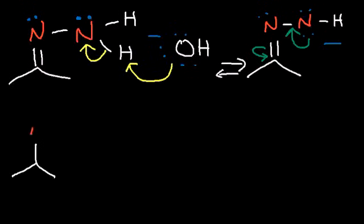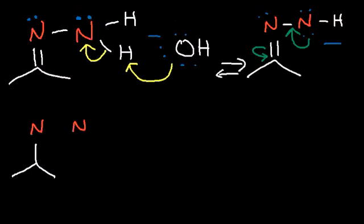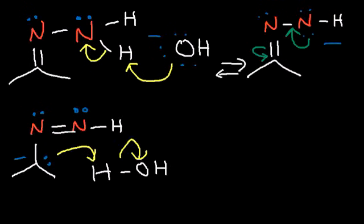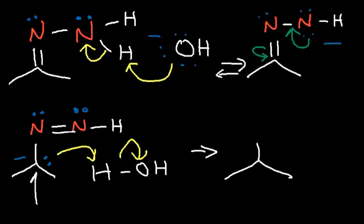We now have the resonance form of this conjugate base, where the negative charge is shared between the nitrogen atom and the carbon atom. So now the carbon has the negative charge and acts as a base, grabbing a hydrogen from water and regenerating the hydroxide ion. Our goal is to replace the nitrogen group and add two hydrogens to this carbon — this is the first hydrogen we've added so far.